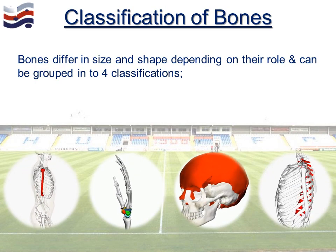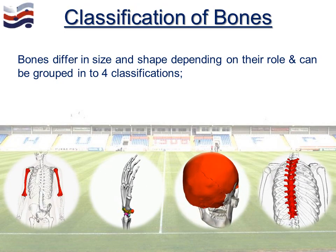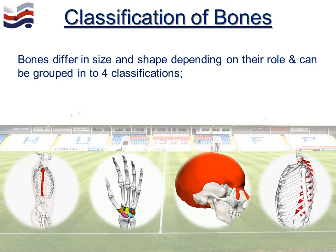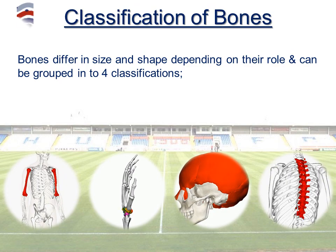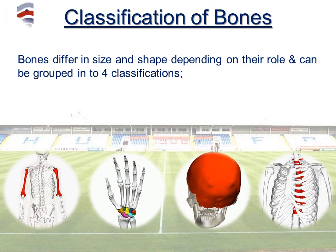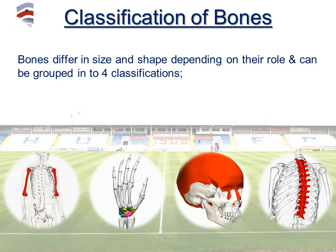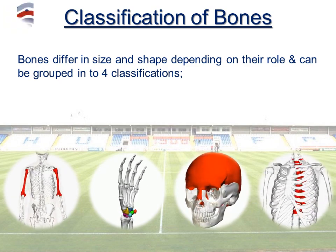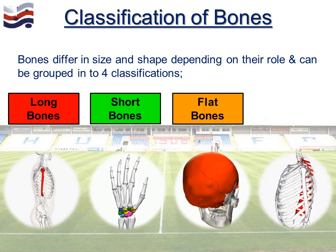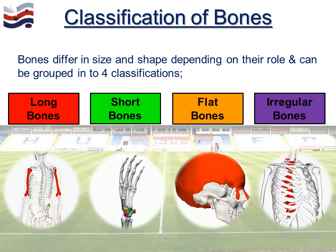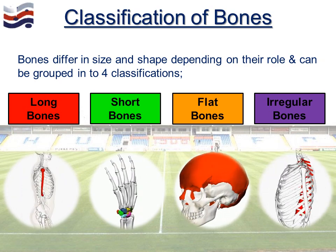Starting with the classification of bones. In the previous lesson you learned 21 major bones of the human body, and what you now need to do is understand which classification they sit in. There are four classifications, each of which differ depending on the size, the shape and the role of the bone. The four classifications are long bones, short bones, flat bones and irregular bones.